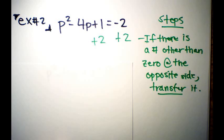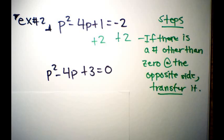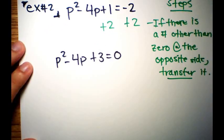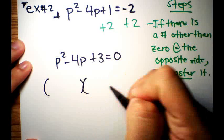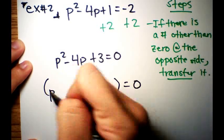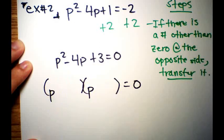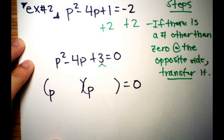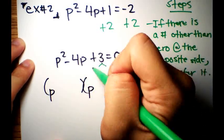Now follow the same steps as example one — factor the trinomial. We have two parentheses; p² splits as p and p. For positive 3, possible pairs are 3 and 1, or negative 3 and negative 1.